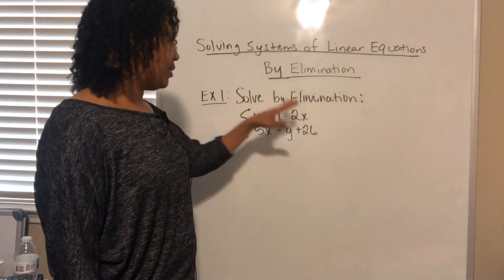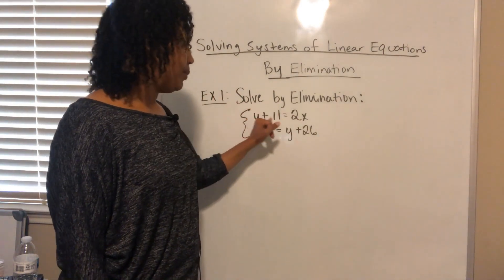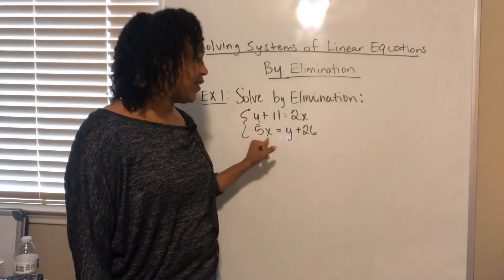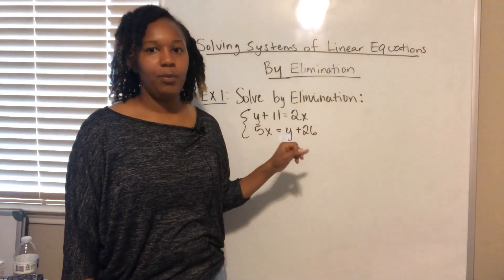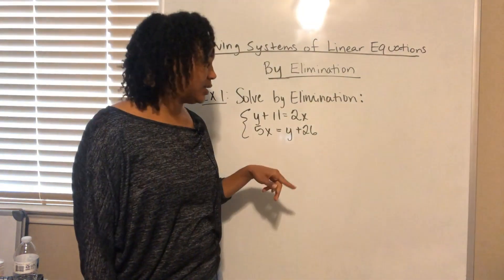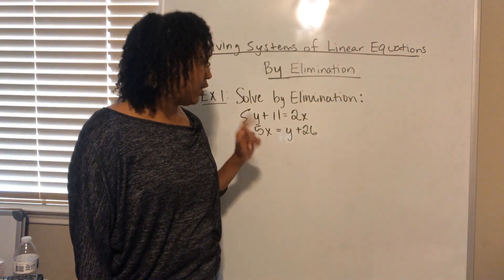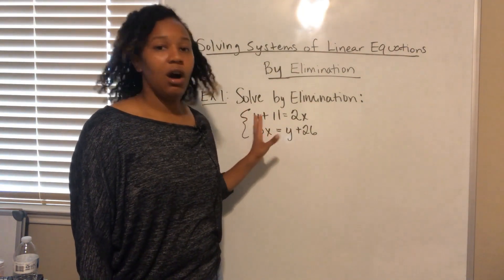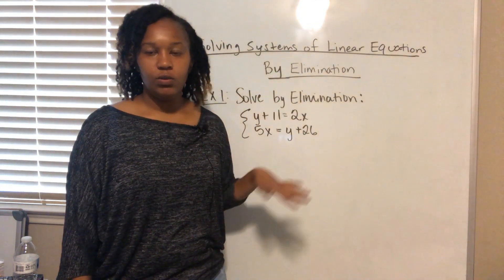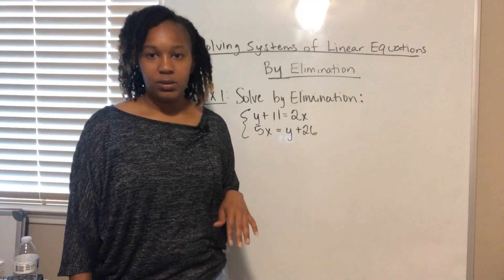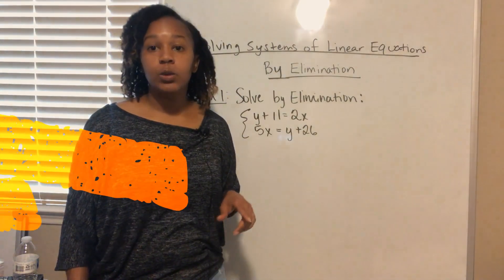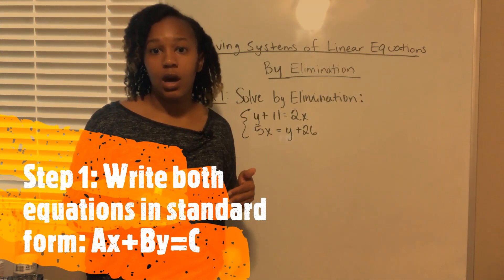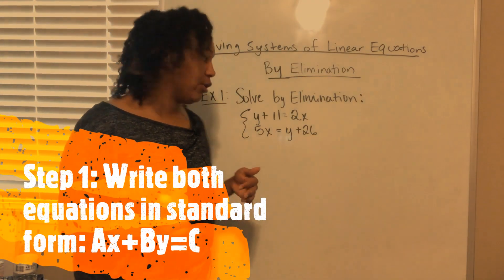So let's look at some examples. For example one, we want to solve this system by elimination: y plus 11 equals 2x, and 5x equals y plus 26. In order to solve this, we have to go through a series of steps. Step one is we want to write both equations in standard form.